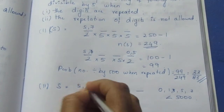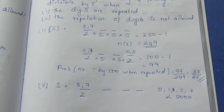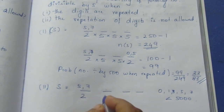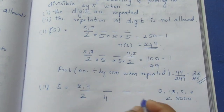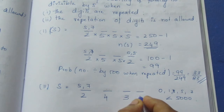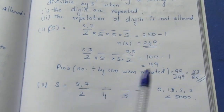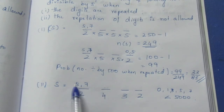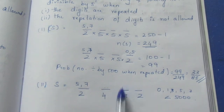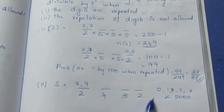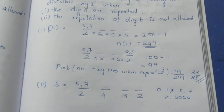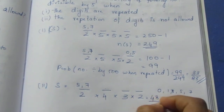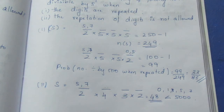With no repetition allowed, we have two conditions. For the first digit (must be 5 or 7), there are 2 ways. The remaining three places are filled from the leftover 4 digits, giving 4 × 3 × 2 arrangements. But we must be careful about 5000 — it doesn't apply here since repetition is not allowed. Multiplying: 2 × 4 × 3 × 2 = 48. So n(S) = 48.